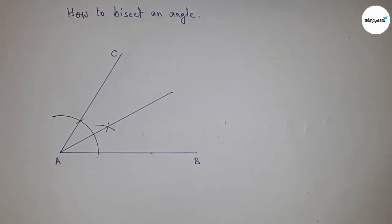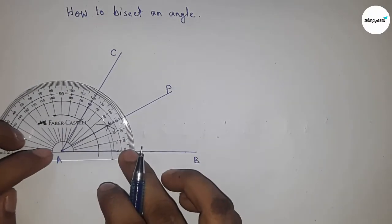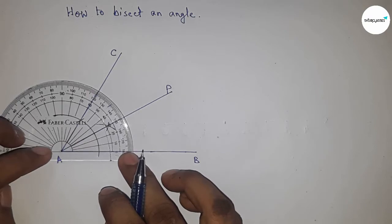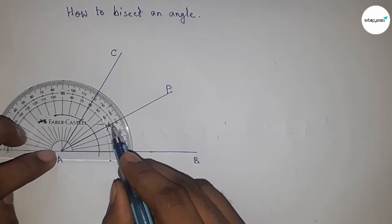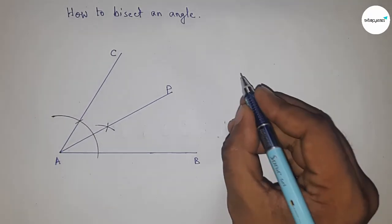Which bisects the 60-degree angle. This is point P. Now checking whether it is right or wrong. This is perfectly 30 degrees.